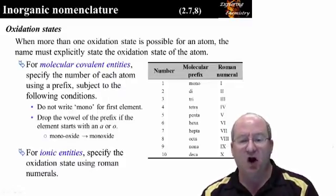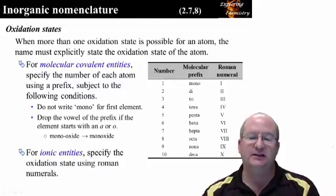If the bonding is ionic and there is more than one possible oxidation state, the oxidation state is specified using Roman numerals.